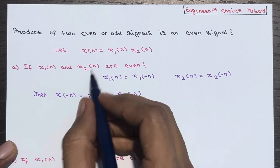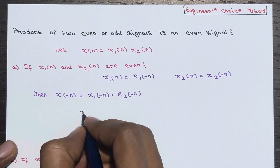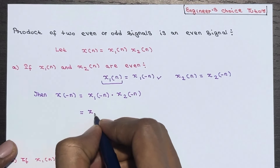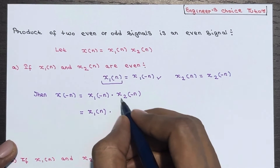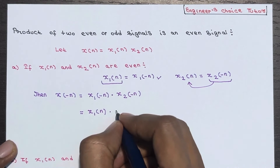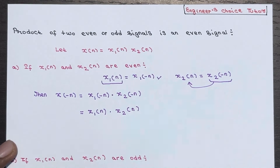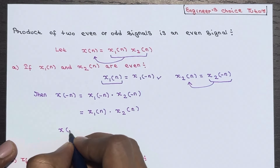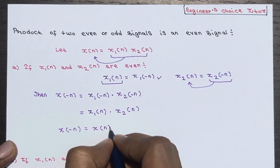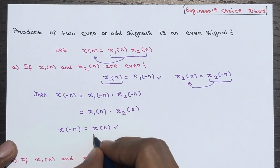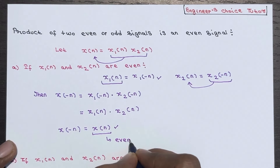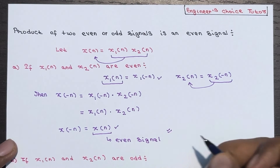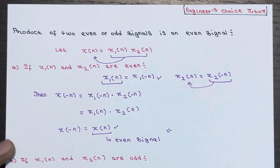Now, x1(-n) can be written as x1(n) since it is even, and x2(-n) can be written as x2(n). So we get x1(n) · x2(n), which is simply x(n). Therefore we have proved that x(-n) = x(n), which is the condition for an even signal. So the product of two even signals is an even signal.